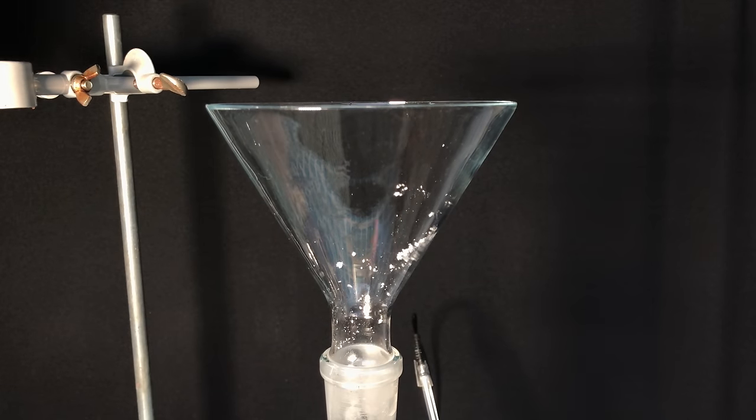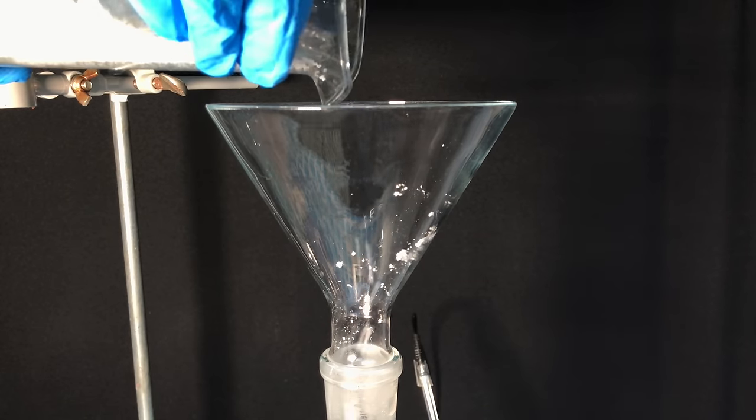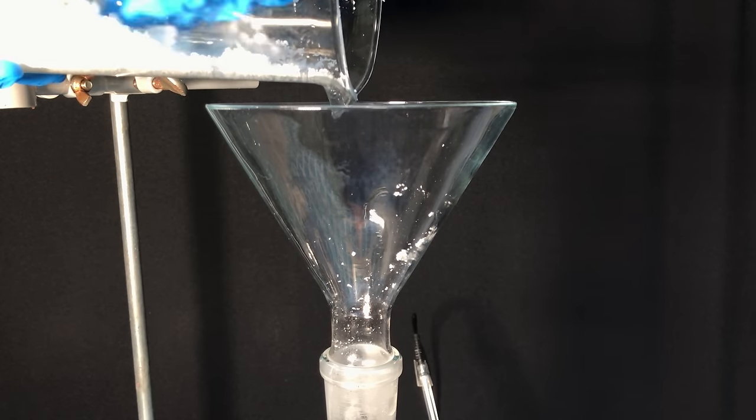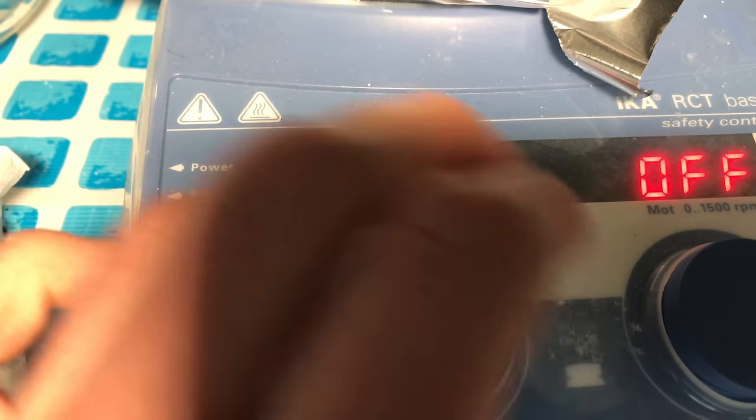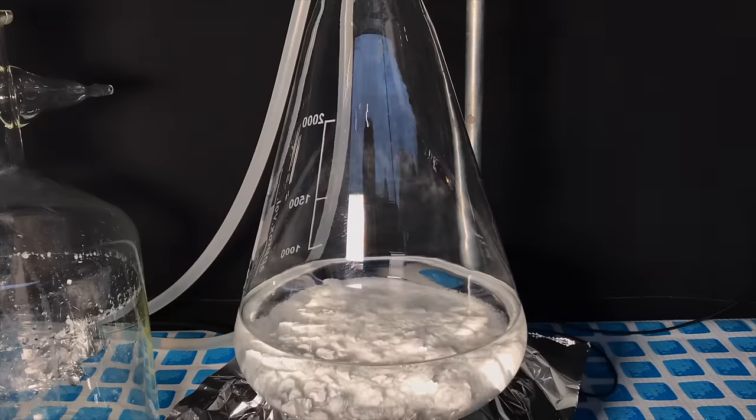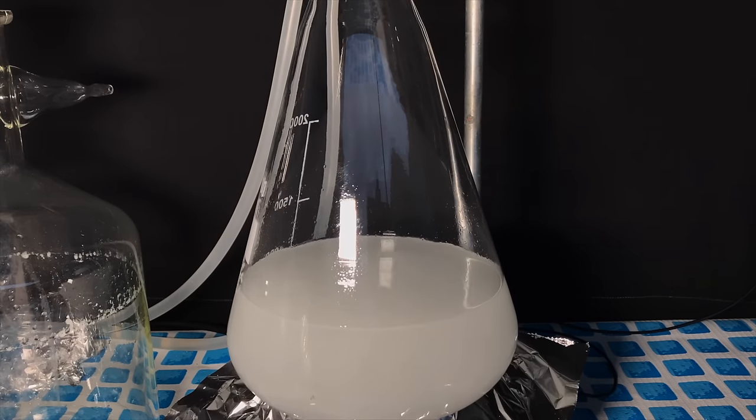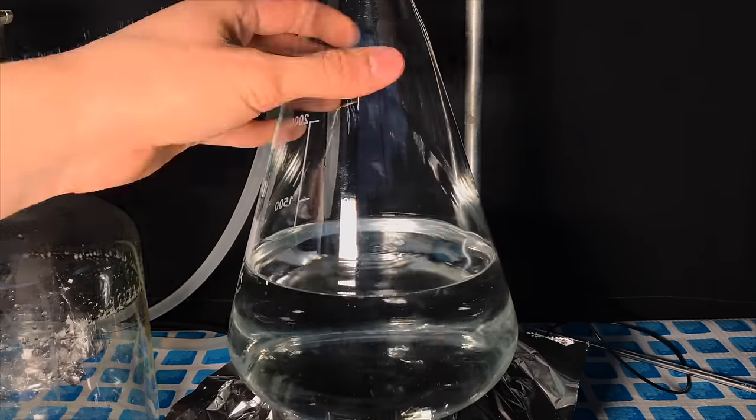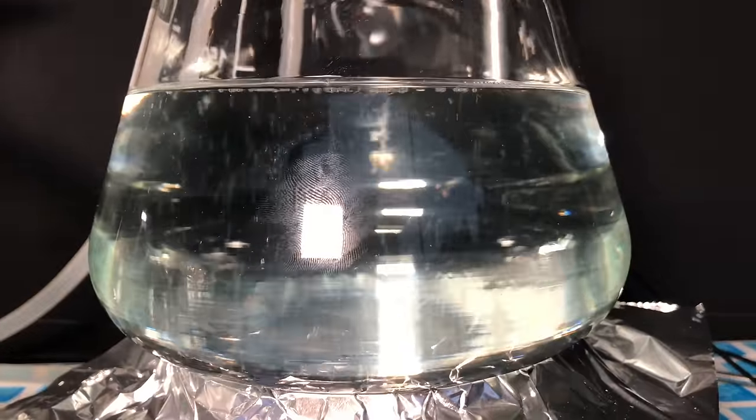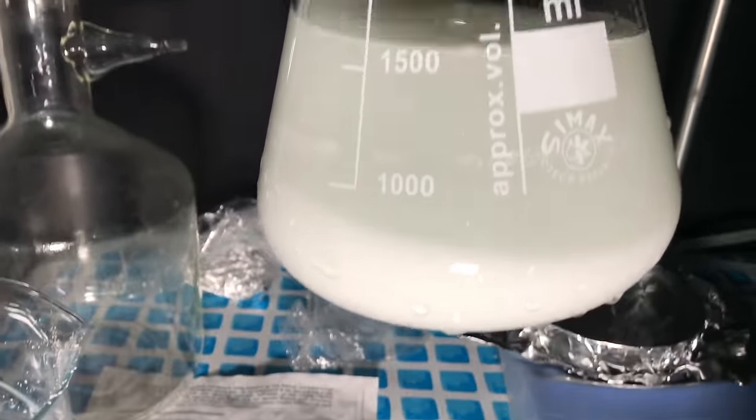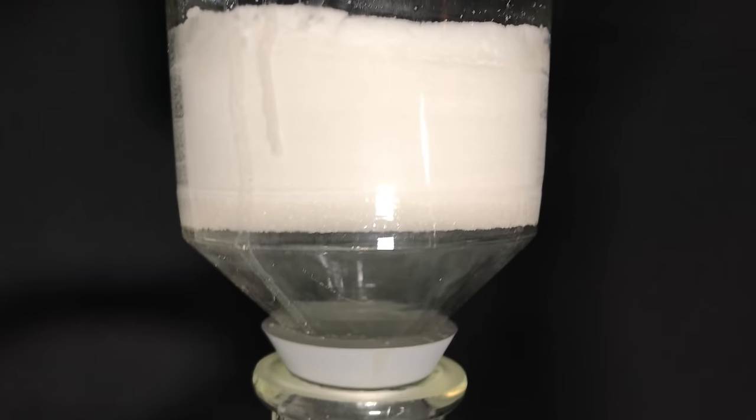To do a recrystallization, all of the powder was added to an Erlenmeyer flask. I added some methanol, set up a reflux and cranked up the hot plate. Once it boiled, more and more methanol was added and in total I added about 800 ml. At some point we were left with a clear solution, so I took it off the hot plate and allowed it to cool down in the fridge. A lot of white stuff crystallized out, we did a filtration and I sucked the vacuum for about 5 minutes.